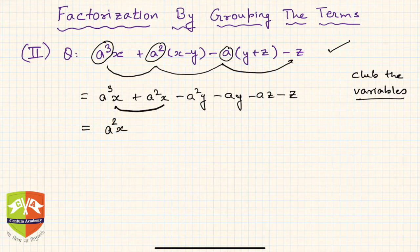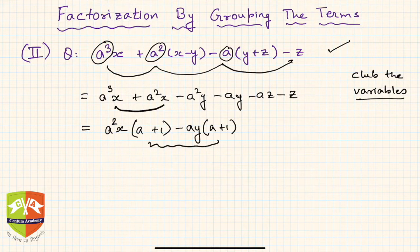So a²x is the common factor. What is left behind is nothing but a+1. Now in the second thing we can take -ay common. So again you will see a+1. We are getting some beautiful results here.